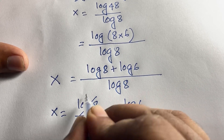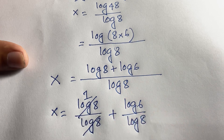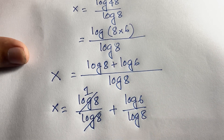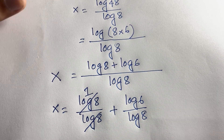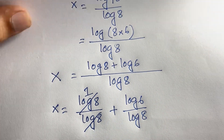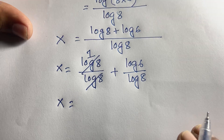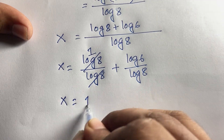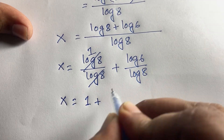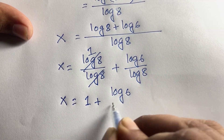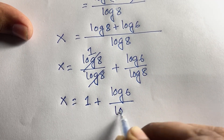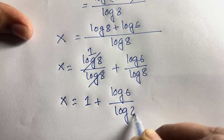Splitting the fraction, x equals log 8 over log 8 plus log 6 over log 8. The log 8 over log 8 cancels to 1, so we find x is equal to 1 plus log 6 over log 8.